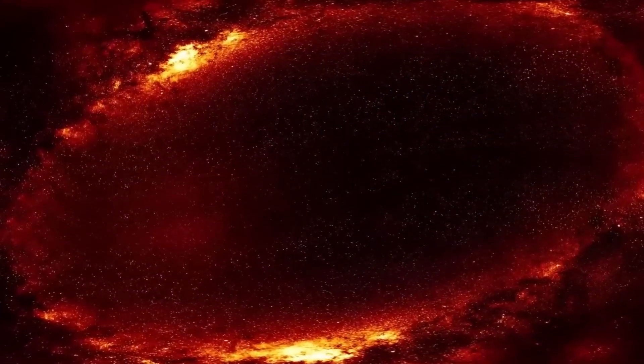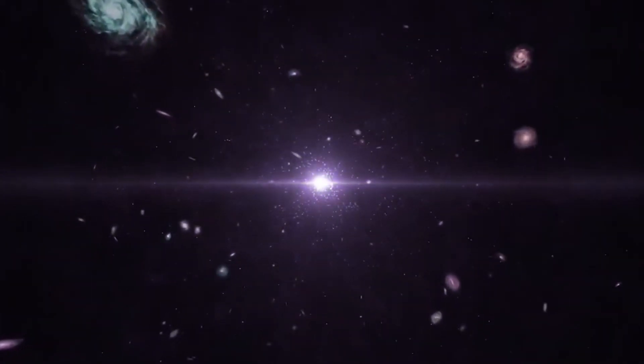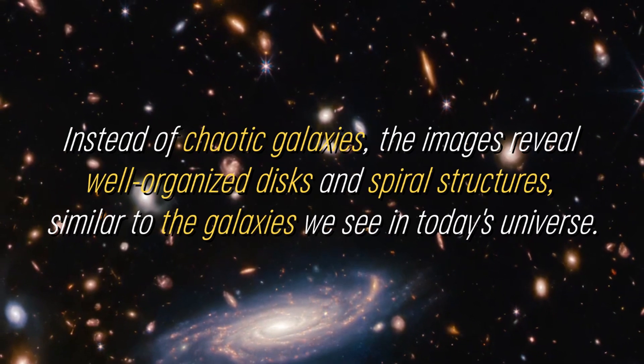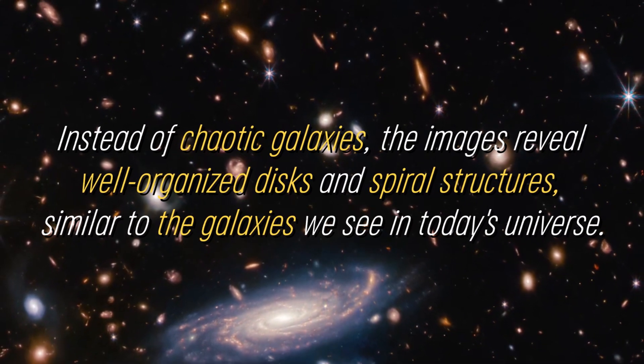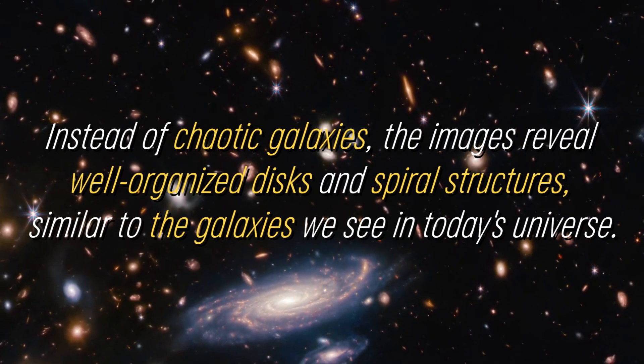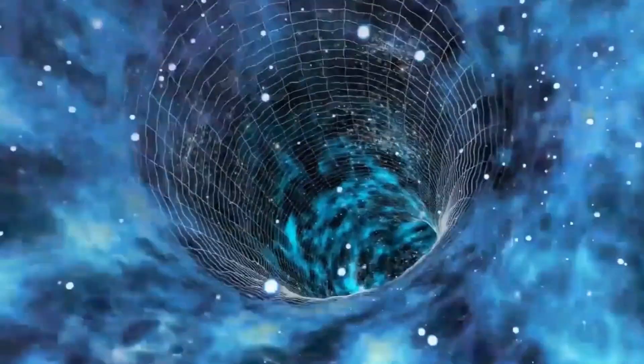Chaotic and disrupted galaxies due to multiple collisions were expected to be observed, but the images captured by JWST tell a different story. Instead of chaotic galaxies, the images reveal well-organized disks and spiral structures, similar to the galaxies we see in today's universe. This unexpected observation challenges the idea that mergers are a common process in galaxy evolution.